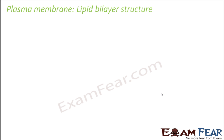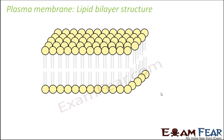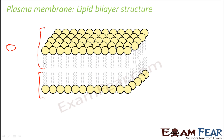Now let us look at the lipid bilayer structure of the plasma membrane. That thin line which you see enclosing the cell, when observed very closely under an electron microscope, looks somewhat like this. Here you can see this is one layer of lipid and this is the second layer of lipid. Since two layers of lipids are present, that is why it is called lipid bilayer structure.